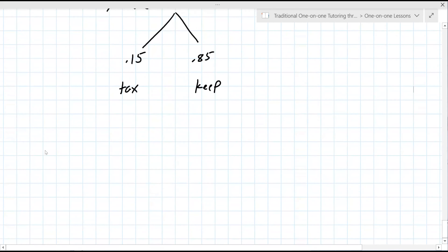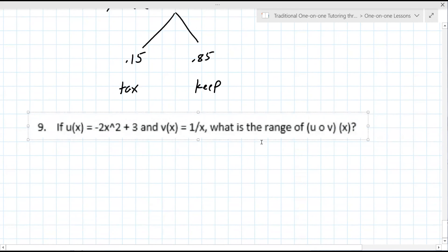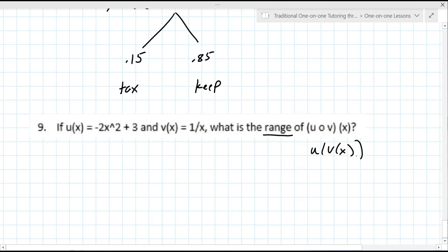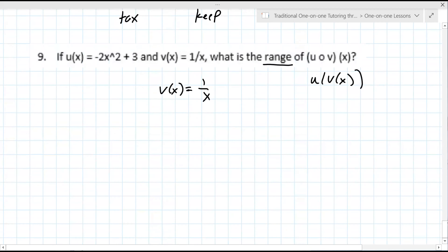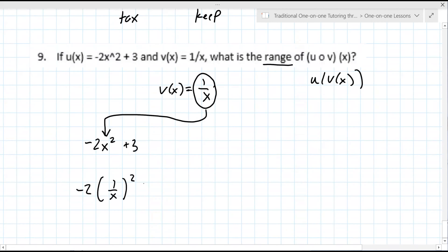Question 9 says: if U of X equals negative 2X squared plus 3, and V of X equals 1 over X — what is the range of U of V of X? V of X is 1 over X, and it's the inside function. So in negative 2X squared plus 3, you take 1 over X and put it wherever X is. So it's negative 2 times (1 over X) squared plus 3.